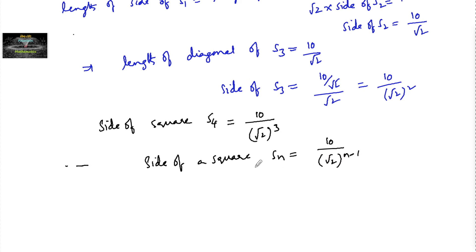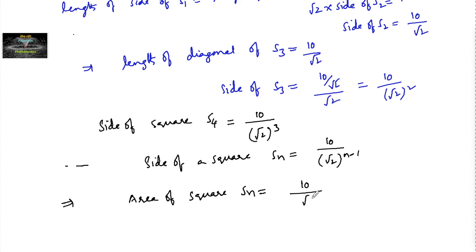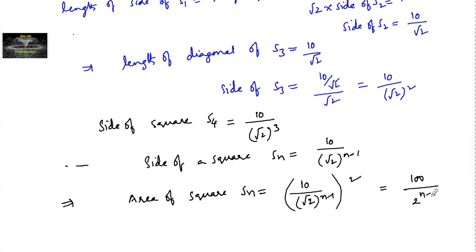So this is the side of the square. The area of sn is equal to 10 upon root 2 whole to the power of n minus 1, squared, which equals 100 divided by 2 to the power of n minus 1, since root 2 squared is 2.